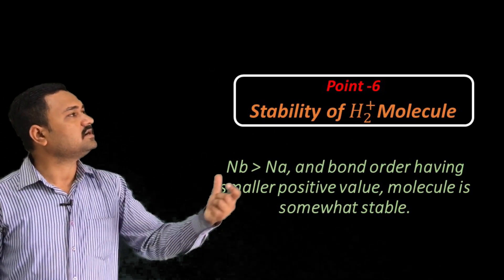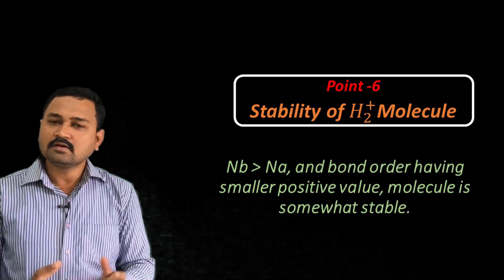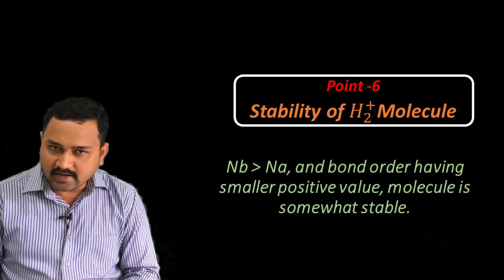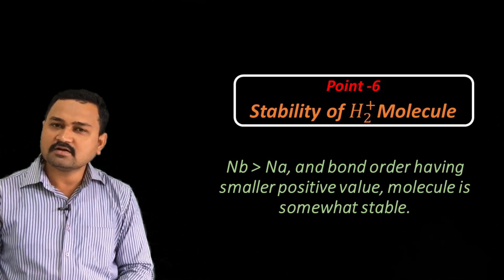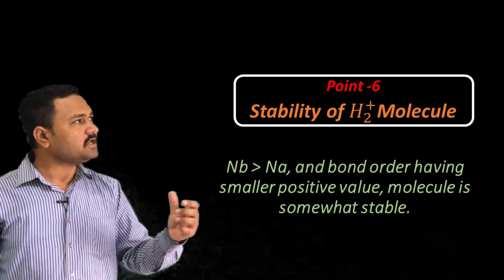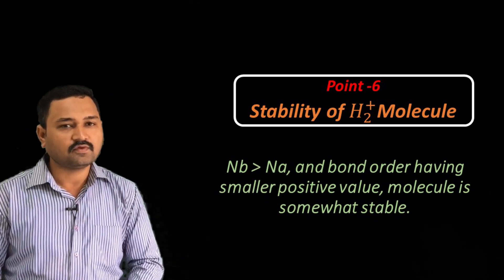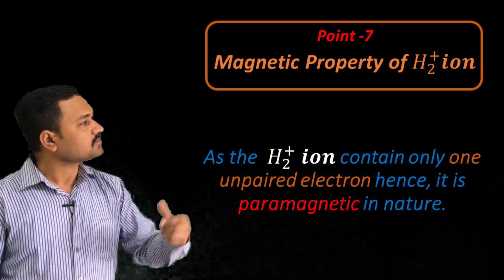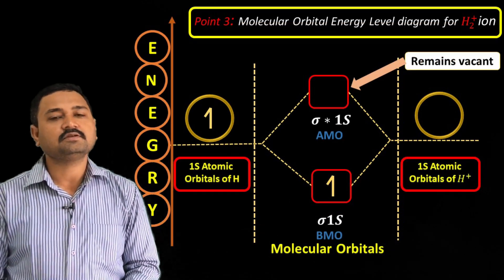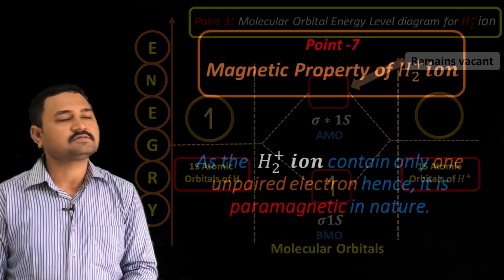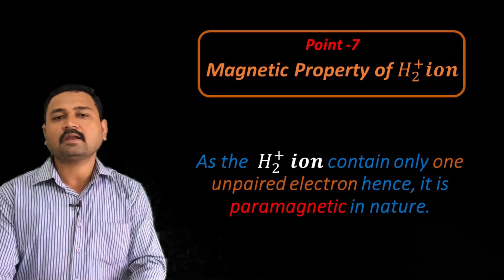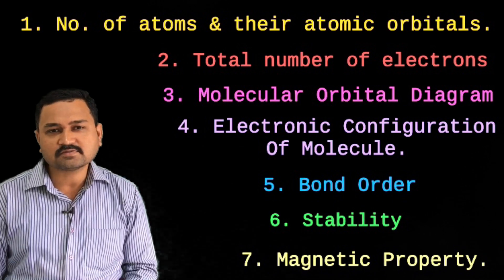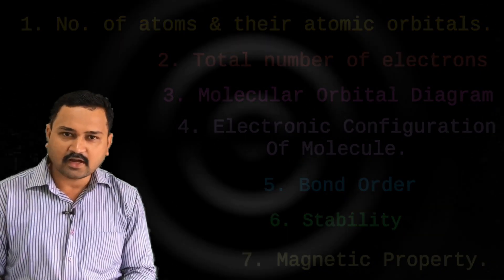Point number six: the stability of H2 plus ion. The number of bonding electrons is greater than the number of antibonding electrons, and bond order is a smaller positive value. Hence this H2 plus ion is somewhat stable. Lastly, the magnetic property: as only one unpaired electron is present in sigma 1s molecular orbital, this ion is paramagnetic in nature. Using these seven steps, we can easily explain the formation and stability of H2 plus ion.